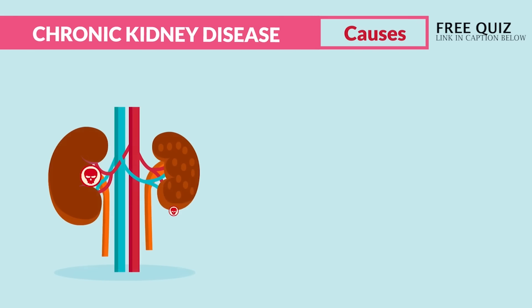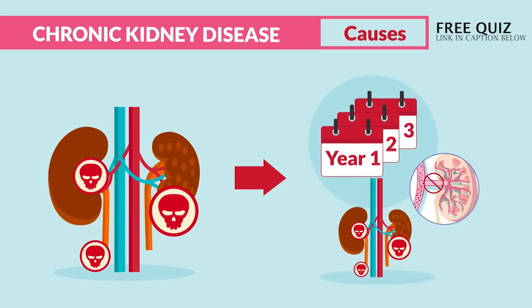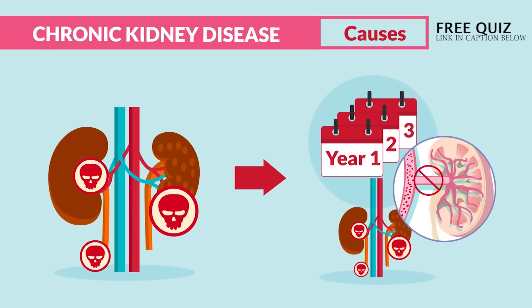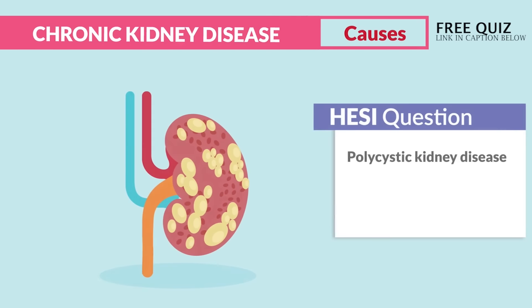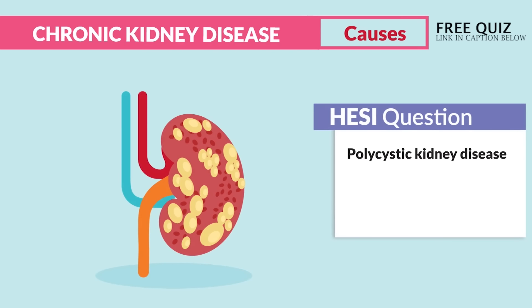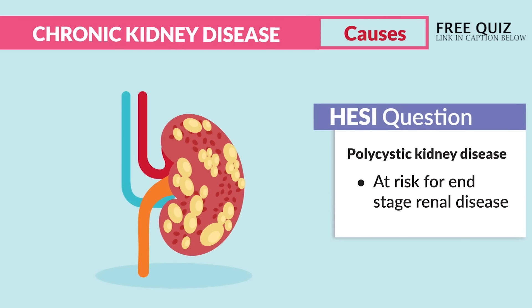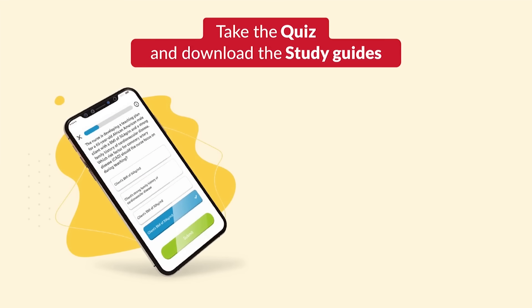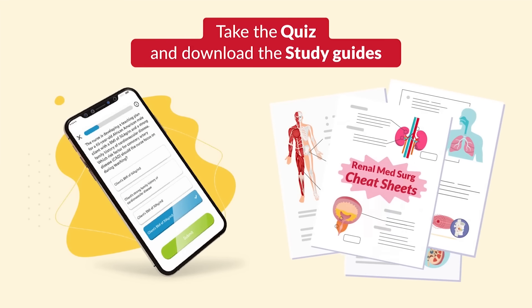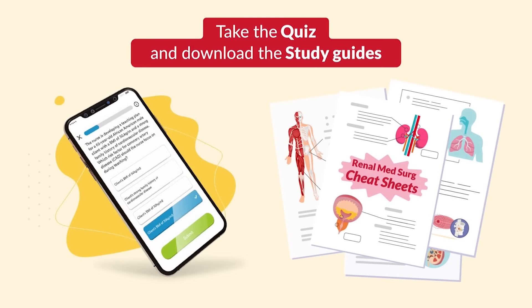Other main causes include infection causing glomerulonephritis, acute renal failure that worsens and progresses into chronic kidney disease, and polycystic kidney disease where cysts develop inside the kidneys themselves.